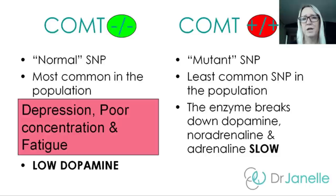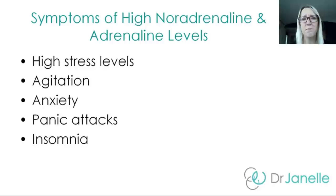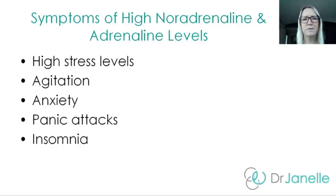Now let's look at the opposite scenario: if you've got the genetic weakness in COMT — two copies of the mutant SNP — this leads to the enzyme breaking down dopamine, noradrenaline and adrenaline slowly. Visually, the water is going into the bucket at a normal rate, but the neurotransmitters are being broken down too slowly — very small holes in the bucket — leading to high levels of neurotransmitters. Too much noradrenaline and adrenaline leads to high stress levels, agitation, anxiety, panic attacks and insomnia.